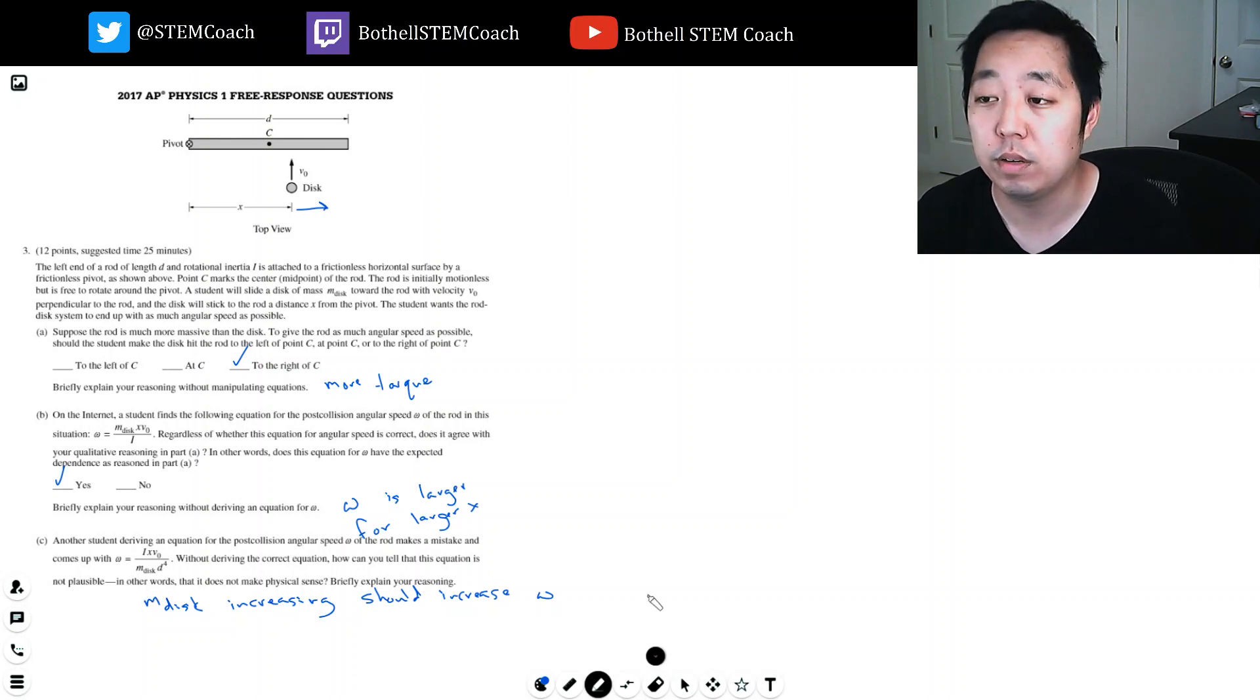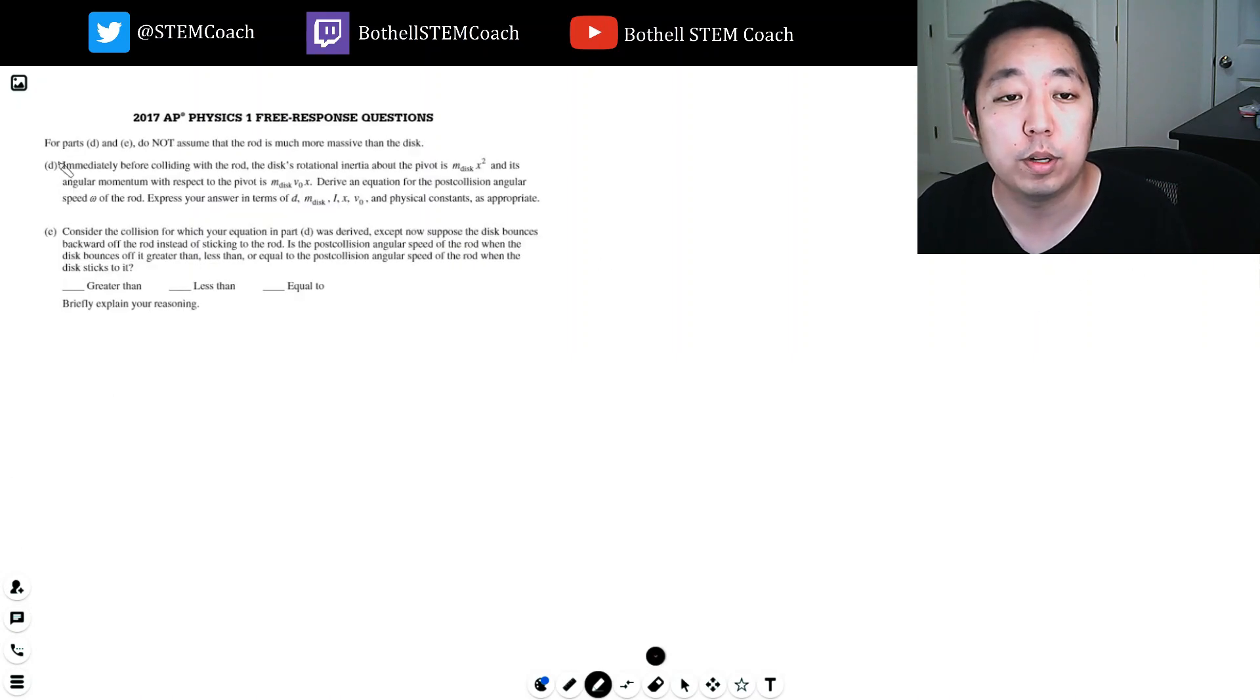For parts D and E, do not assume that the rod is much more massive than the disc. Immediately before colliding with the rod, the disc's rotational inertia, that's I, I'm going to write I there just so I know, is this. And its angular momentum with respect to the pivot is that. Derive an equation for the post-collision angular speed omega of the rod.